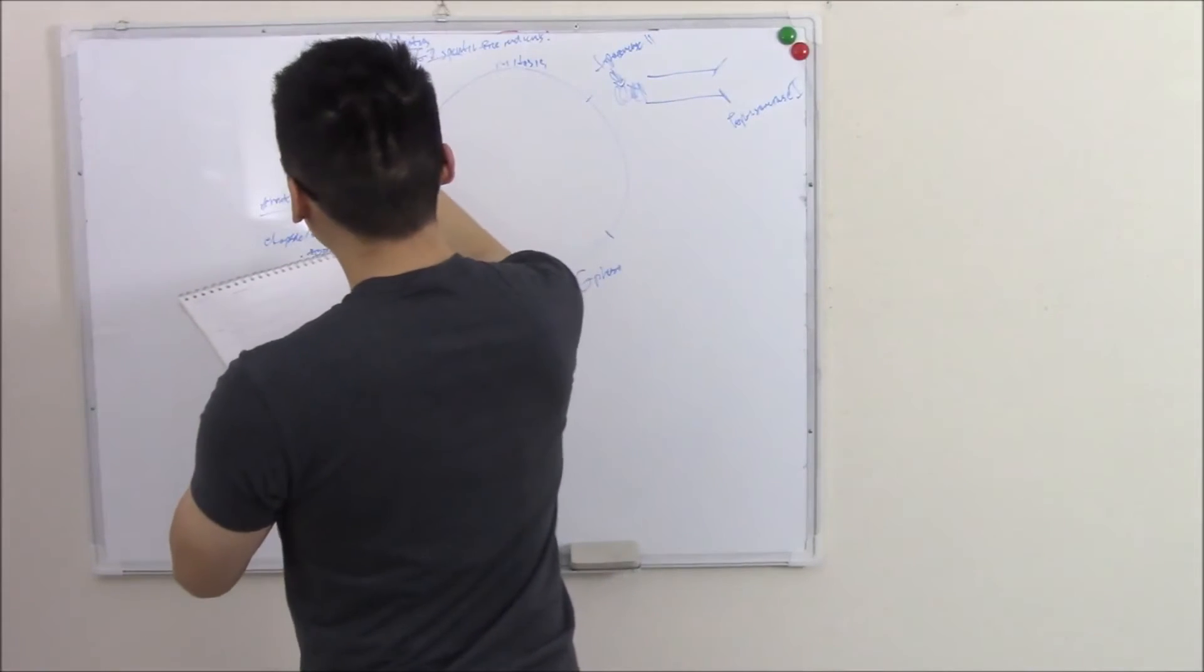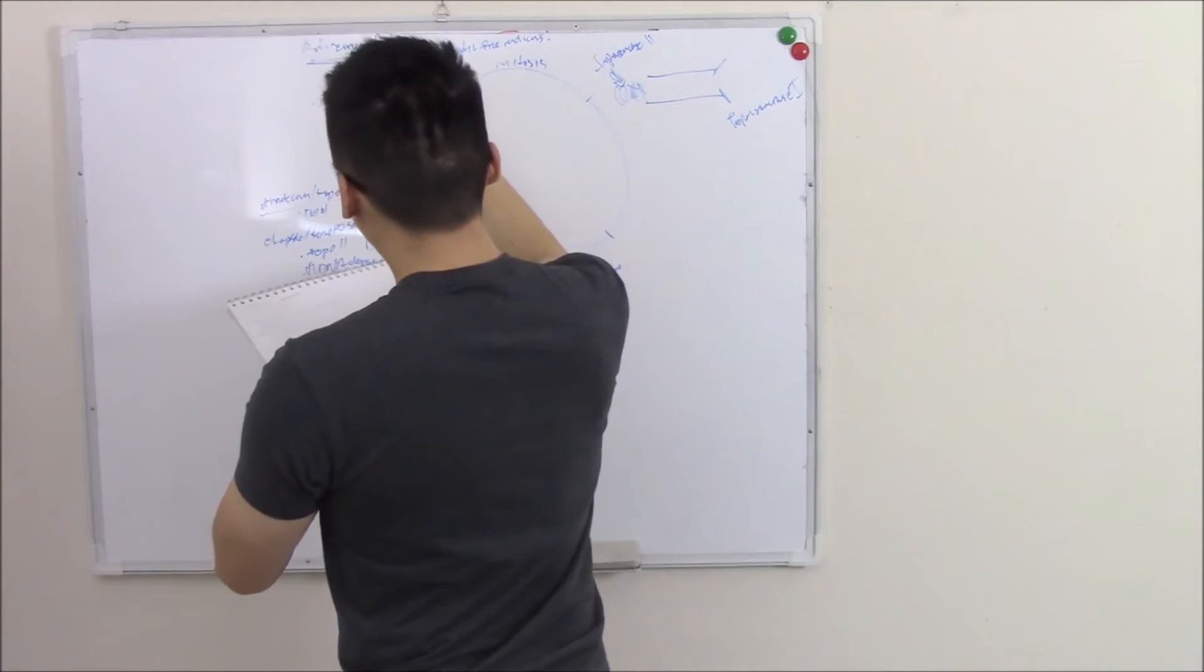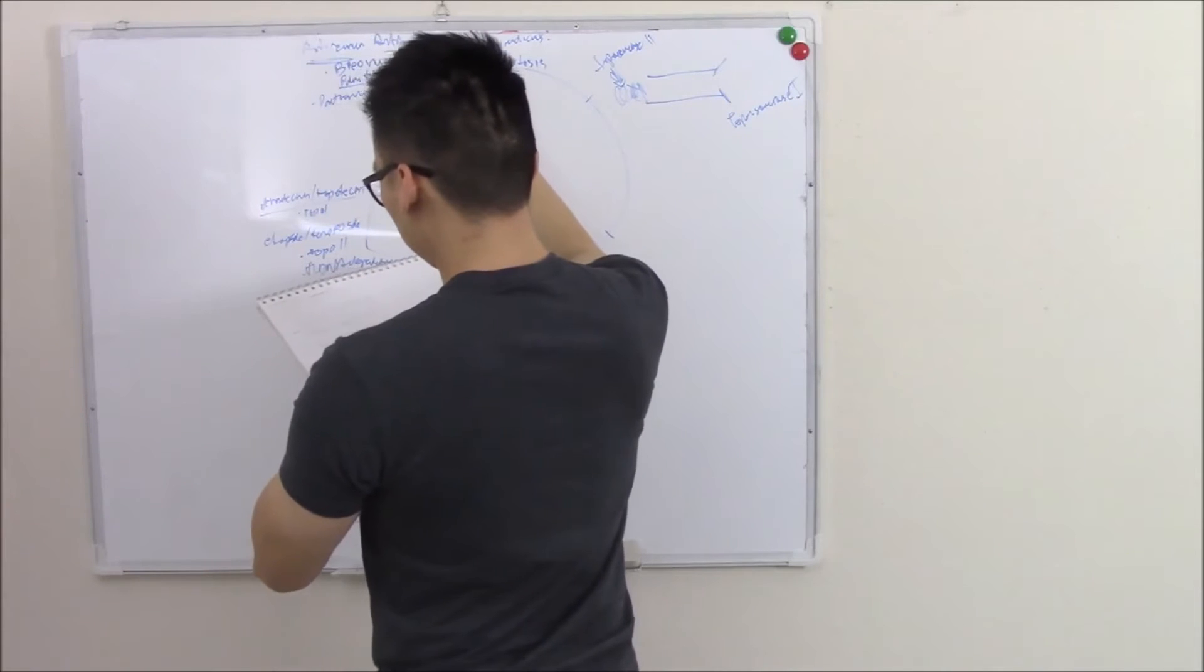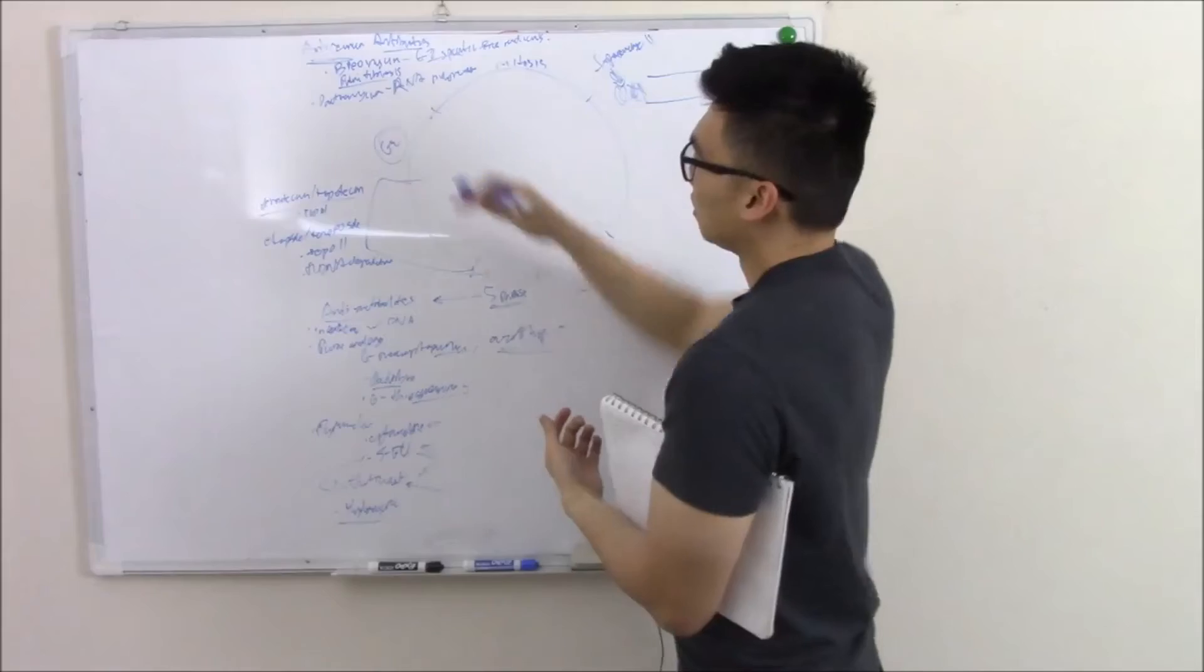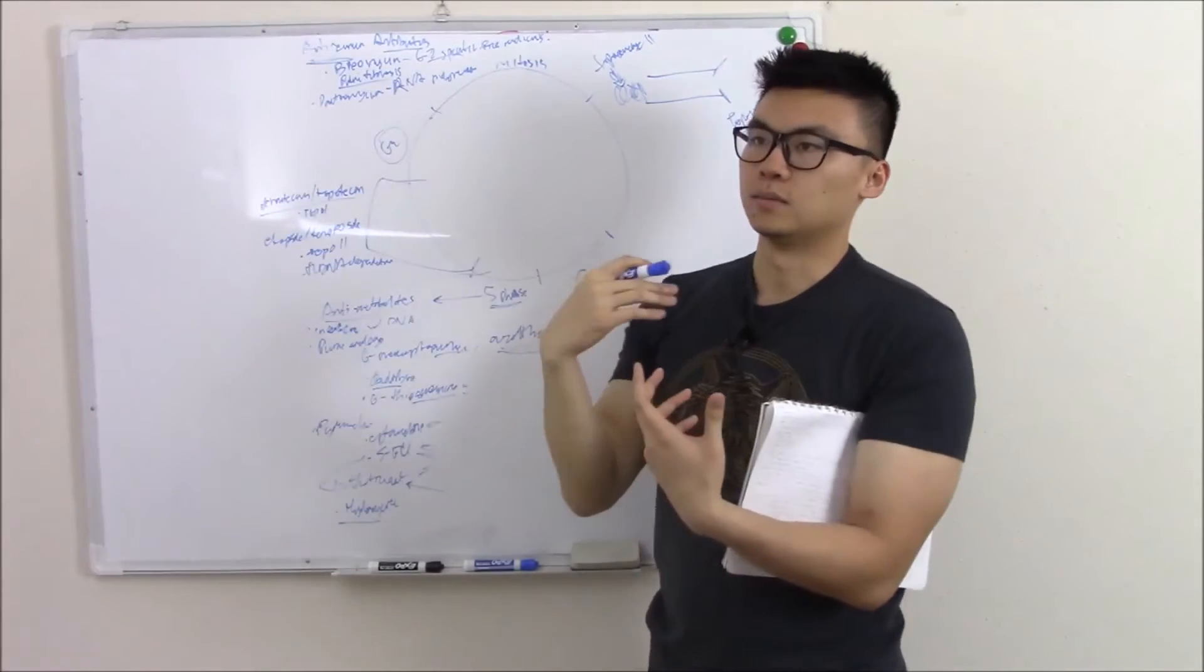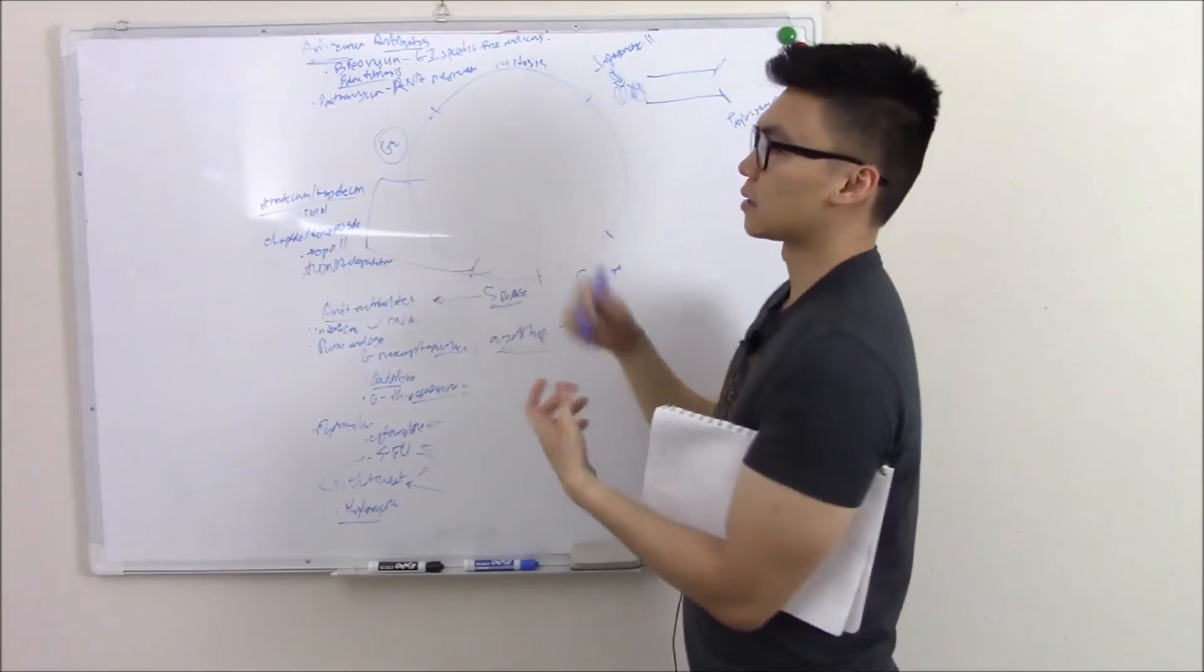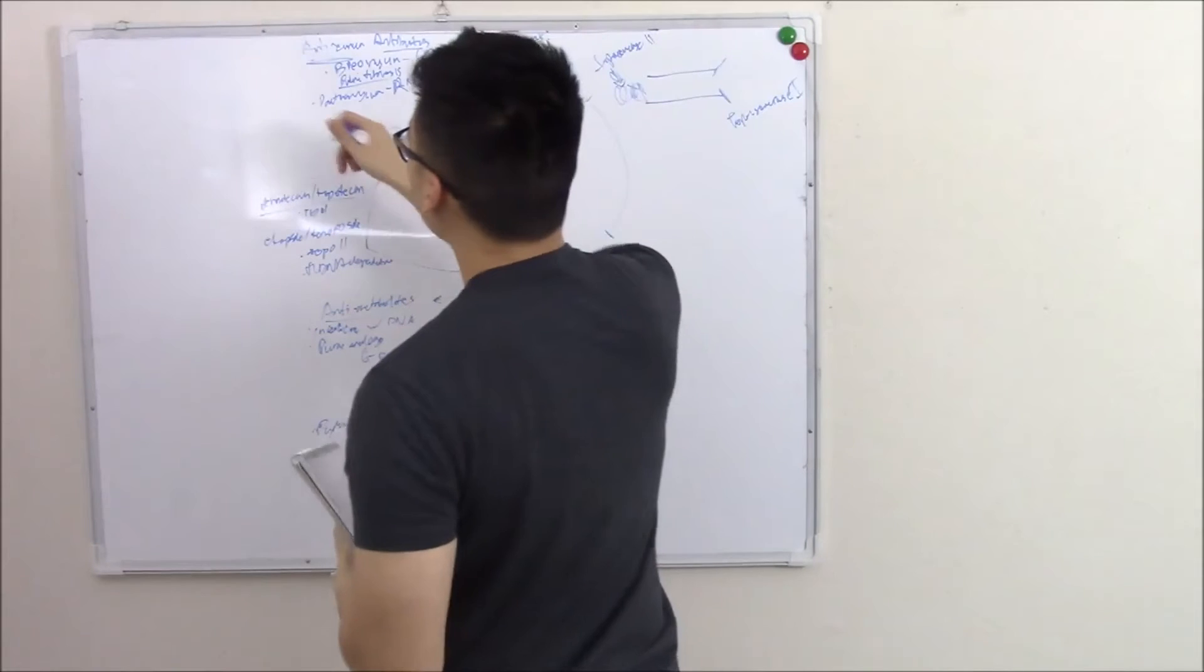Another drug, dactinomycin. This blocks RNA polymerase. There are fungal toxins, toxins from fungi and mushrooms that do the exact same thing. Alpha-amanitin does the exact same thing. And that's why some mushrooms are poisonous and can kill you.